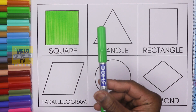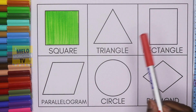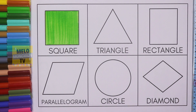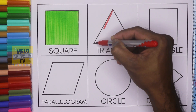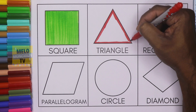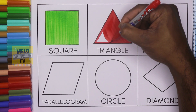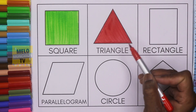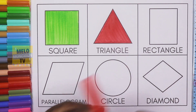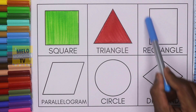Next, I'll take red color to color the triangle. The shape is called triangle, let's color it. This is triangle and the color is red. Next, I'll use light blue color to color the rectangle.